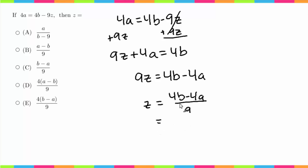And the last thing I'm going to do, since the top I have a 4 in both terms, I'm going to factor that out. So I'm going to get z equals 4 times b minus a over 9. I probably should have drawn this a little bit lower.